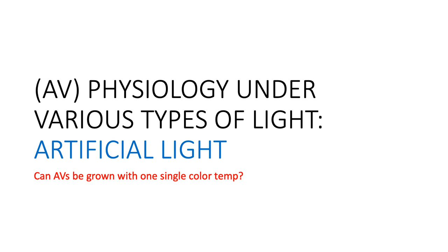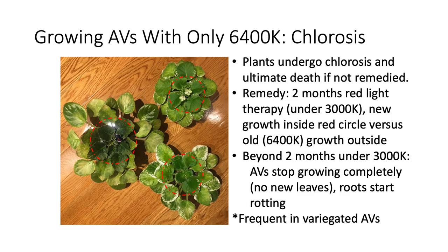The first question: can African violets be grown with a single color temperature light? Many of us growing variegated African violets notice the leaves start to bleach or become yellow as the plants continue to grow under artificial lights. Using three different variegated African violets, I drew a red circle around new growth versus old growth. These three plants were grown under 6,400K lights for months. I decided to throw them under 3,000K lights — high red — to see what happens.